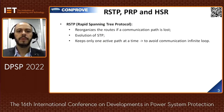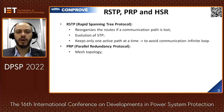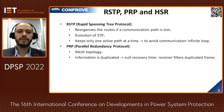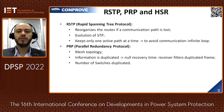The PRP, Parallel Redundancy Protocol, is implemented in a mesh topology. The information is duplicated so recovery time is zero in case of link loss. The device that receives the information discards the duplicate one. In PRP, the redundancy is implemented by duplicating the number of switches.